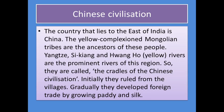China is to the east of India, and here the yellow-complexed Mongolians were the ancestors, the people who ruled China. This civilization flourished on three rivers: Hangtis, Sikigang and Hangho. These three are the prominent rivers of this region and are called the cradles of Chinese civilization. These Mongolians ruled from villages and gradually developed foreign trade by growing paddy and silk.